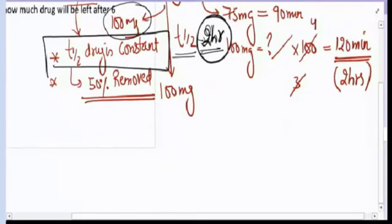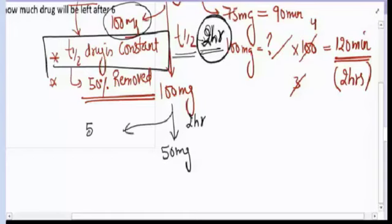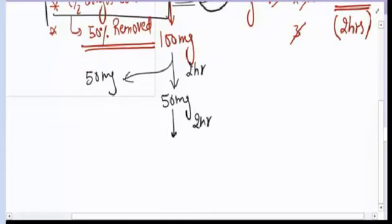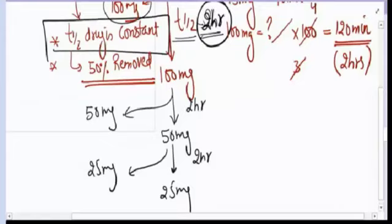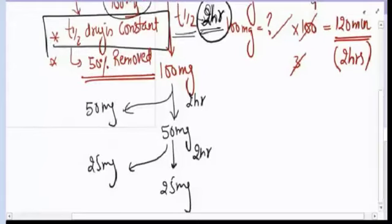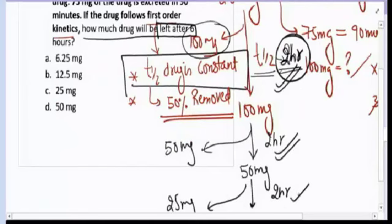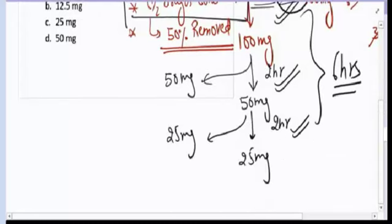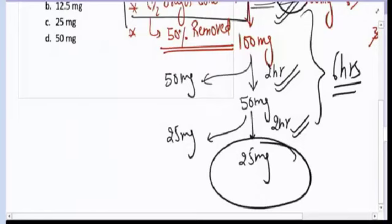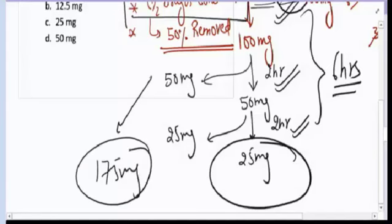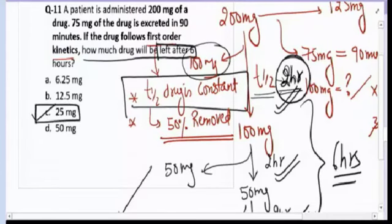Since the half-life is constant (2 hours), after 6 hours (three half-lives: 2+2+2), 25 mg of the drug will remain in the body and 175 mg will have been removed. So the correct answer for question number eleven is 25 mg.